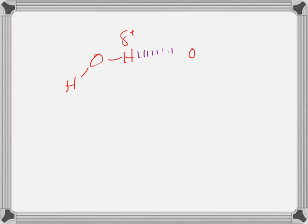A better way to orient it might be like this. And now what do we have? We've got the partial negative interacting with the positive — that interaction. We have a dipole on the right-hand side and a dipole on the left-hand side. Do we have a hydrogen bound to oxygen, nitrogen, or fluorine? Yes — so hydrogen bonding.